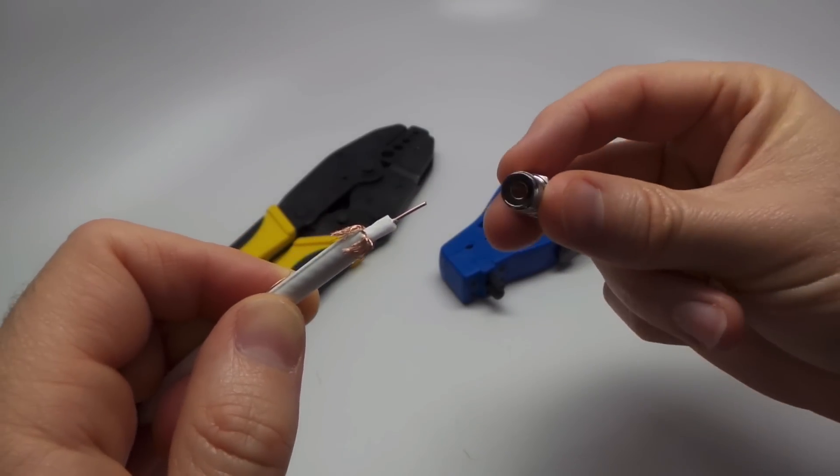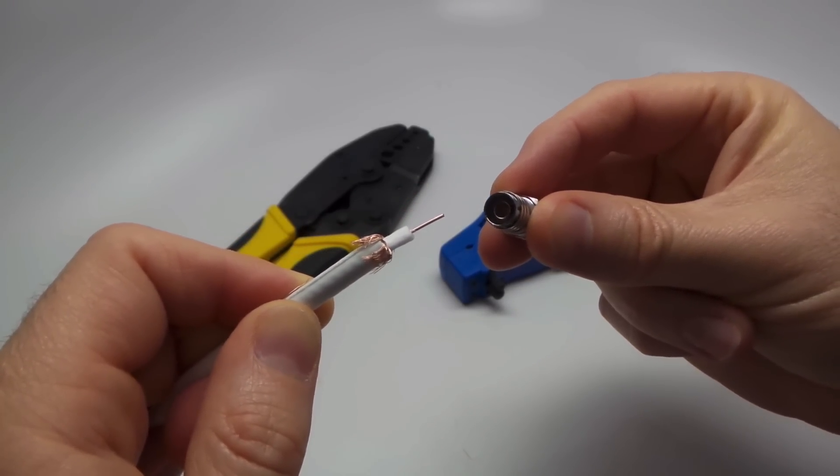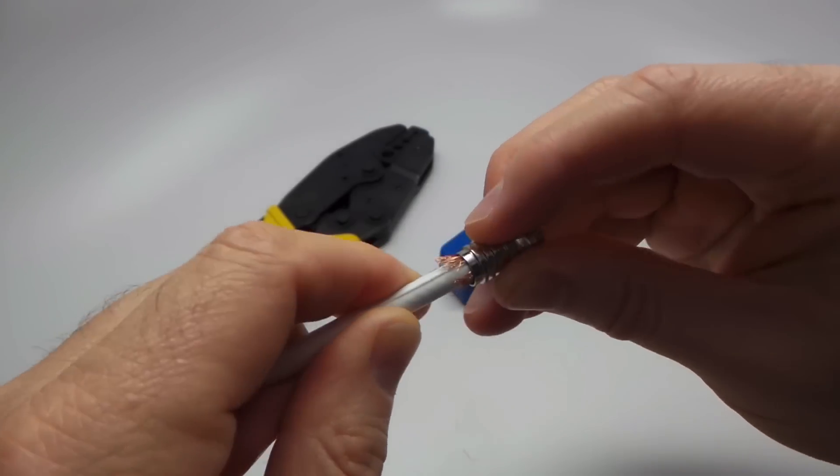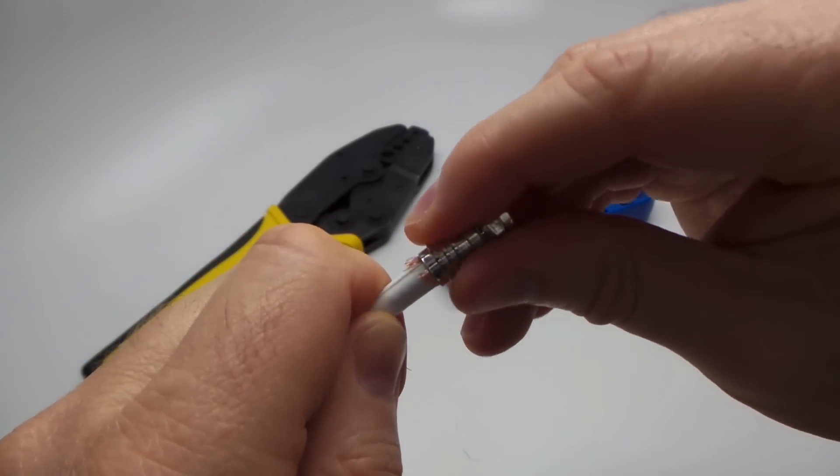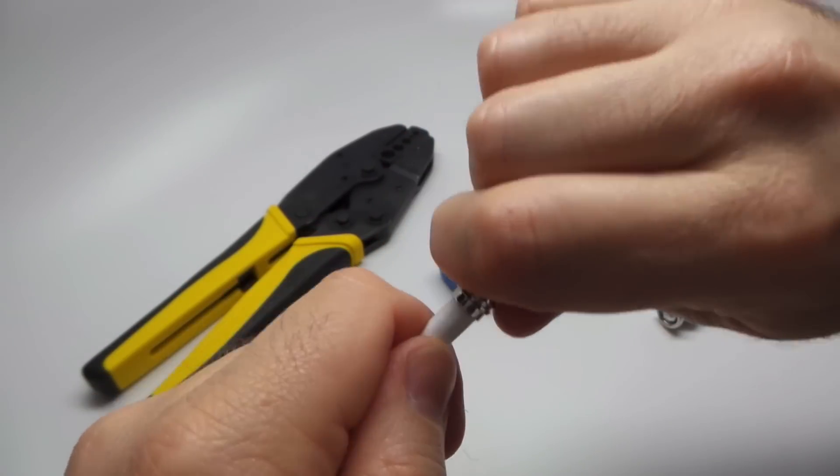And then I'm going to grab the F connector, and the dielectric insulator and the center core go into that center cylinder, and then the copper braiding is on the outside like this. And you'll have to give this some good pushes and twists to get it all the way on.